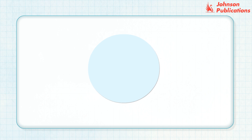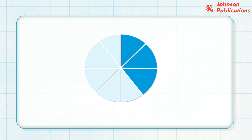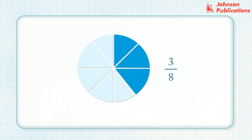Here the circle is divided into eight equal parts, out of which three parts are shaded. So the fraction of the circle that is shaded is three by eight. We write this fraction like this and read it as three eighths.